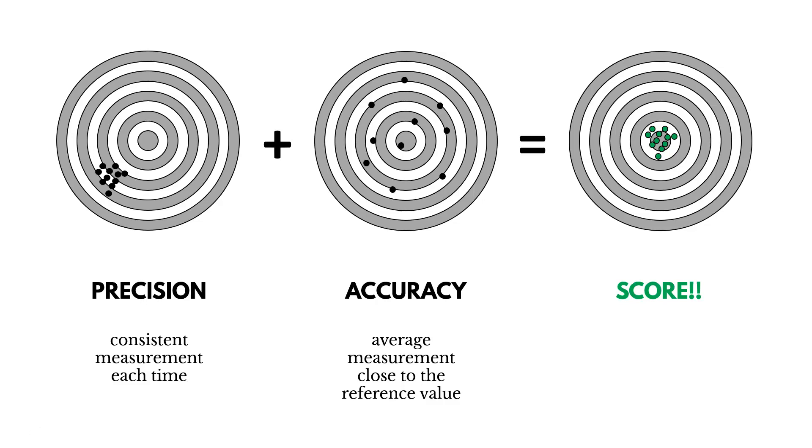Accuracy is, on average, you're close to the reference, or the target you're seeking. If you get both of those things, you get these measurements close together and close to the reference value, whatever that is. So you're seeking for precision and accuracy.